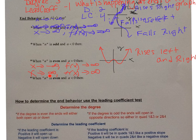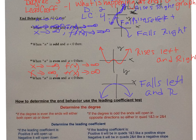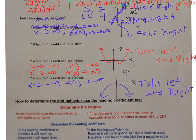When n is even and a is less than 0, meaning a is negative, both ends will be down — falls left and right. As x goes to negative infinity, f(x) goes to negative infinity. As x goes to positive infinity, f(x) also goes to negative infinity.